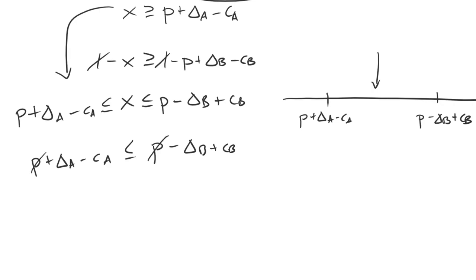Well, from here we see that the P's cancel out and then we're left with CA plus CB greater than or equal to delta A plus delta B. This is the end game of our proof and you'll notice a similarity to things that we've looked at before.